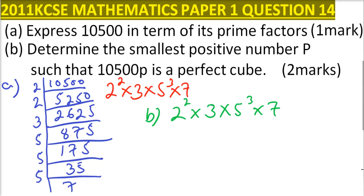So to make it a perfect cube, then it means that we need to have another 2 to make it 2 cubed. For 3, we have only 3 to power 1, so we need another 3 squared so that when we multiply by 3 it becomes 3 cubed. For 5, we already have 5 cubed, so we don't need to multiply with that because it's already cubed.